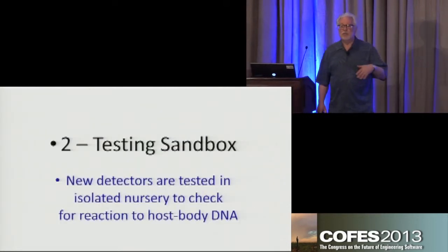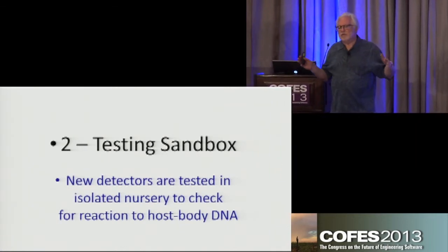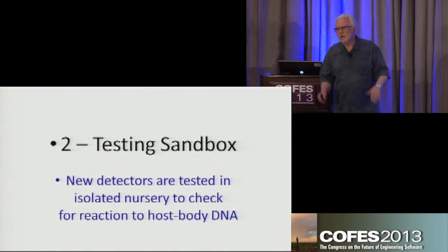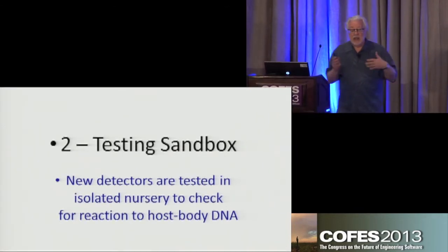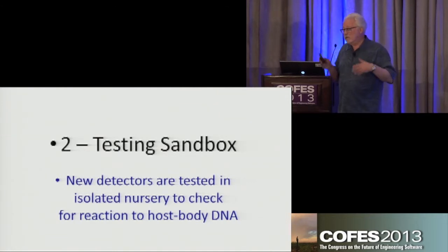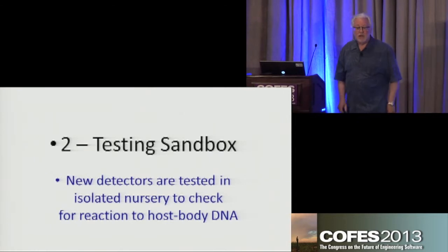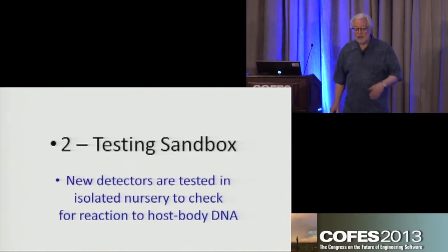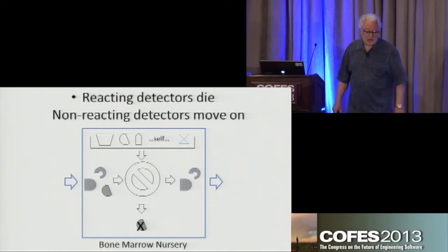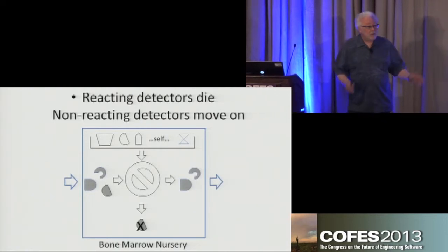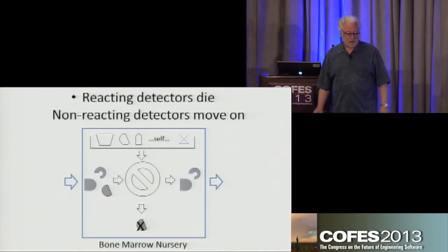Before we send them into the bloodstream where they might attack your liver, we put them into what I'll call a containment vessel in bone marrow and thalamus, and we flush them with bodily fluids. Anything that reacts to those bodily fluids immediately dies. Anything that doesn't react after some period of time is considered safe and sent into the bloodstream. So we have a filtration mechanism. The same process happens in both bone marrow and thalamus.